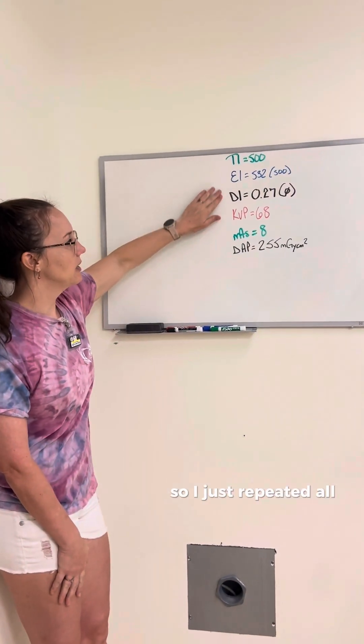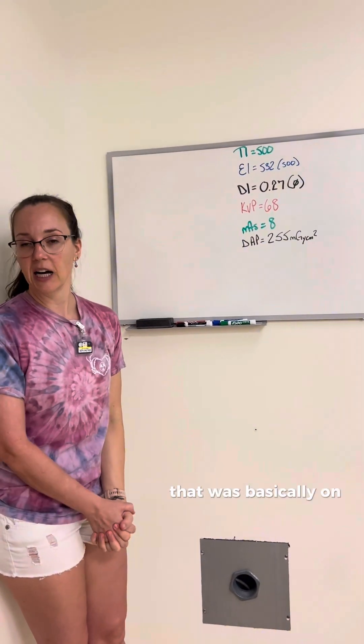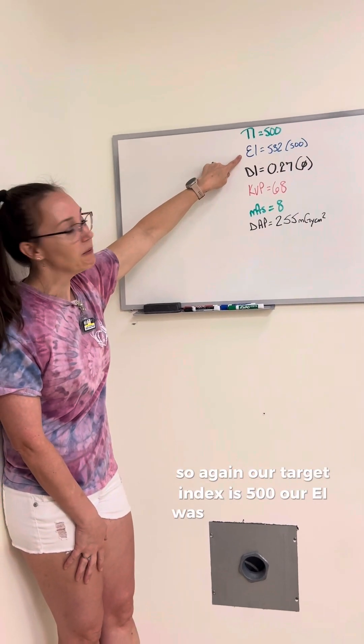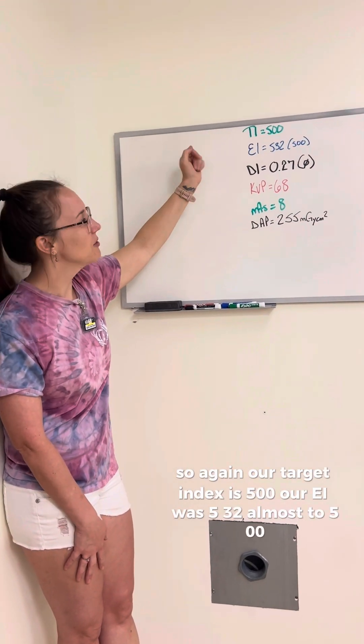So I just repeated all of this information that was basically on our last video. So again, our target index is 500, our EI was 532, almost to 500, it's close enough.